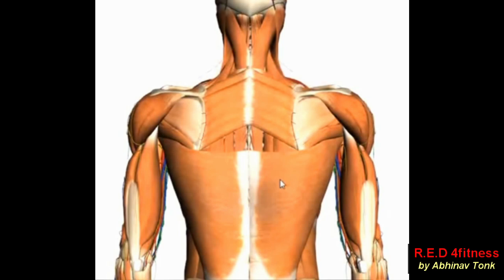Before discussing the rhomboid muscle further, let's see the significance of the word rhomboid. If you're aware of geometrical shapes, you may have heard of the rhombus. A rhombus is a parallelogram whose opposite sides are parallel and all sides are equal. Rhombus with right angles — 90-degree angles — is known as a square.